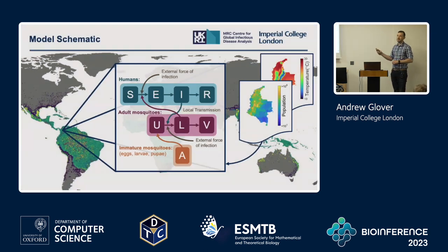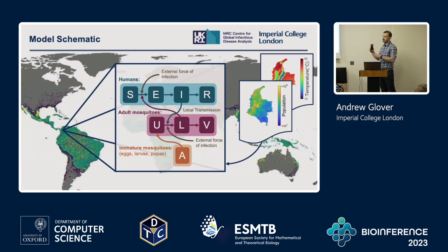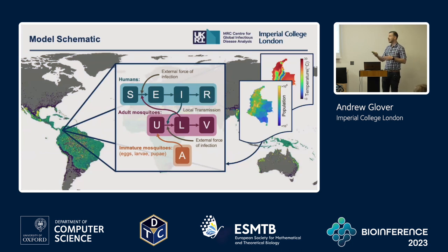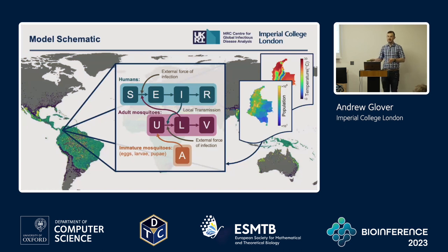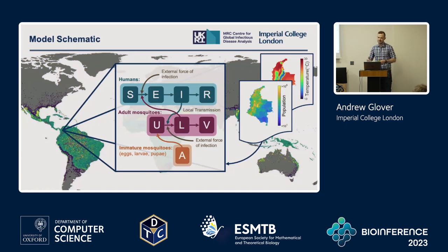This gives a brief overview of the transmission dynamics model I developed. It's a spatial metapopulation model where you take the region or country of interest and split it up into a latitude-longitude grid. Within each patch you have a human population with SEIR dynamics — susceptible, exposed, infectious, and recovered — and an adult female mosquito population with SEI dynamics, termed ULV for ease of notation. There's also a compartment for immature mosquitoes encompassing eggs, larvae, and pupae, and I feed in population and temperature data.